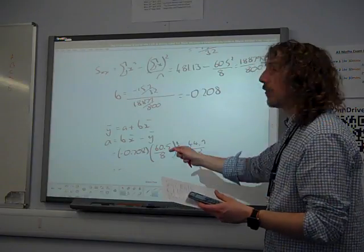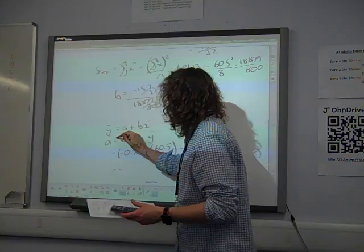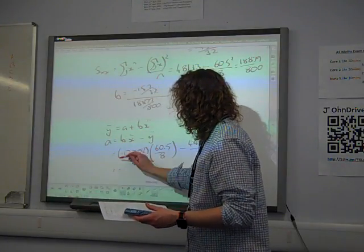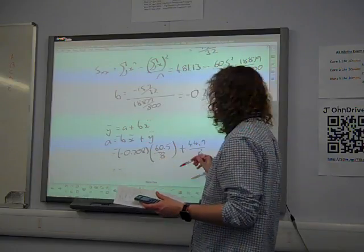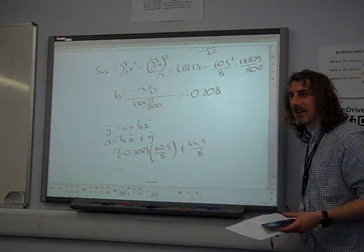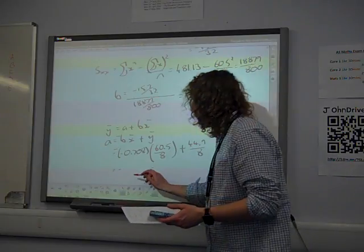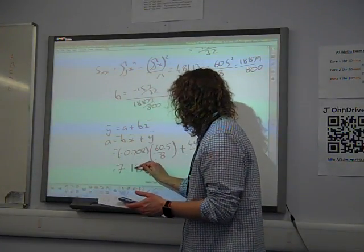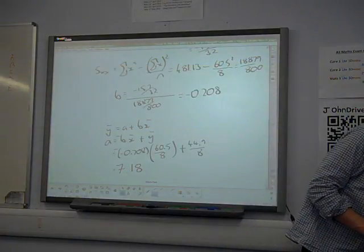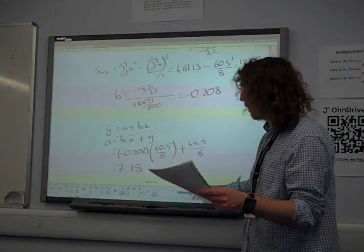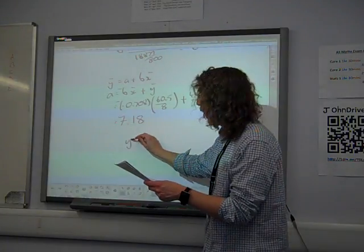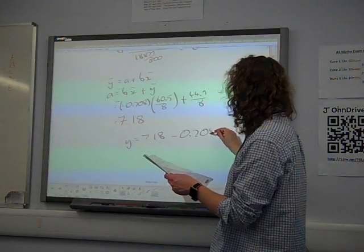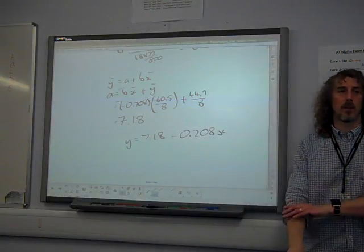It should be negative. Sorry. Oh man, that's foolish. It's still on. Look at that. Yeah, there we are. Ha ha ha, great recovery. So it gives me plus 7.18, three significant figures, which gives us our formula of y equals 7.18 minus 0.208x. And that's what we should have ended up with.